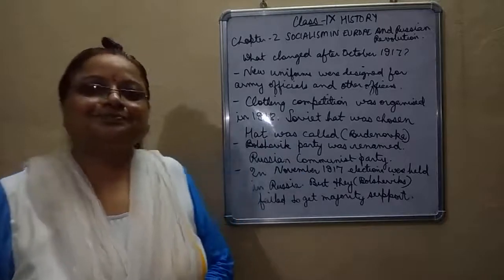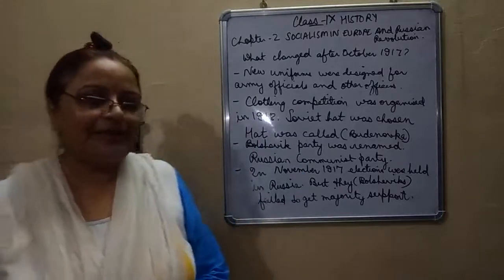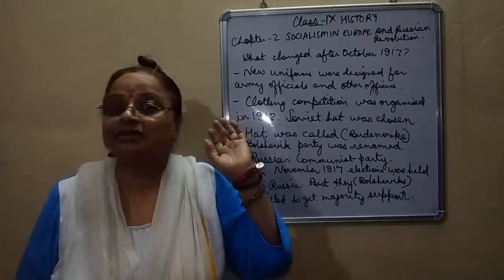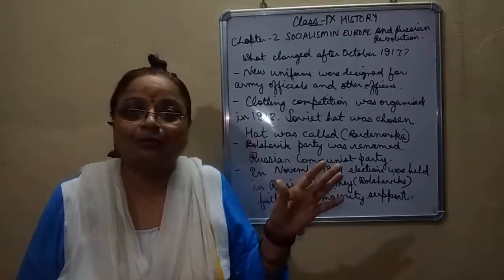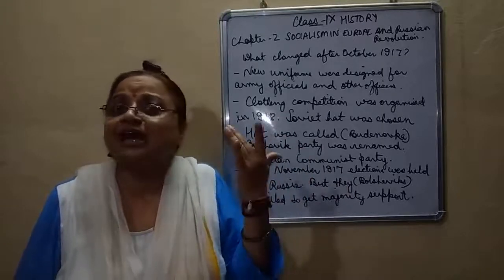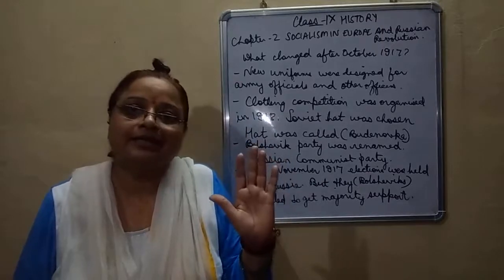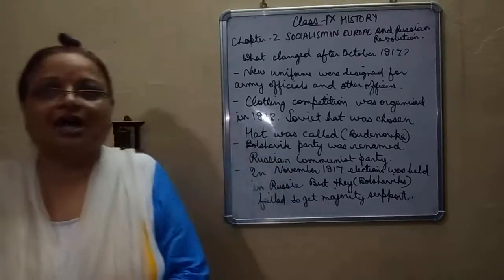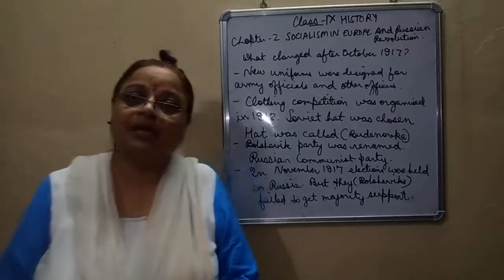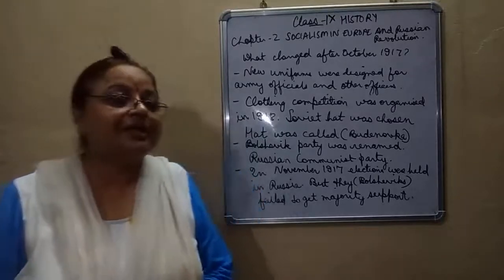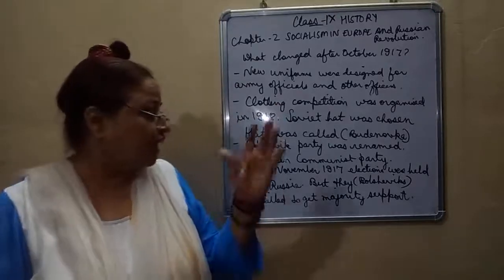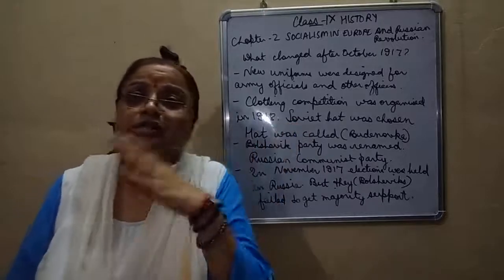While discussing this chapter, some of the points that we have been discussing — yesterday I had done a proper revision of whatever points we have done till now. Now what we are talking about is the October Revolution. We have completed the October Revolution. What we are talking about right now is the changes that happened in Russia after the October Revolution, which happened on such a large scale. New uniforms were designed, partition of houses was done — big houses, as I was telling you in the last video.